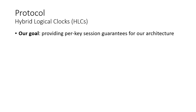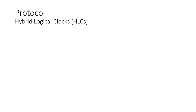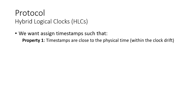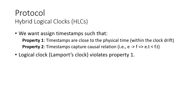In our algorithm, we utilize hybrid logical clocks to timestamp versions. Let's see why we chose hybrid logical clocks over conventional logical clocks and physical clocks. We want to assign timestamps such that two properties are satisfied. Property one: timestamps are close to physical time within the clock drift. Property two: timestamps capture causal relations — that is, if E happens before F, then the timestamp of E is strictly smaller than that of F. Logical clocks violate property one, as logical timestamps have no relation to real time. Physical clocks violate property two due to physical clock anomalies such as going backward or clock skew between different machines.